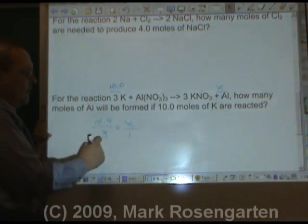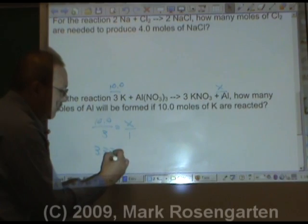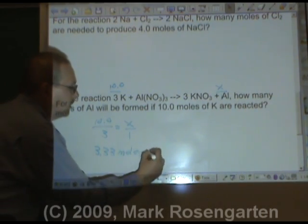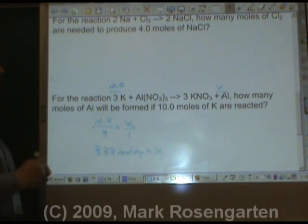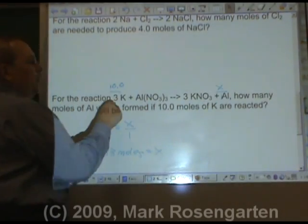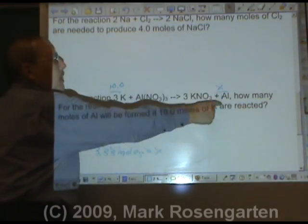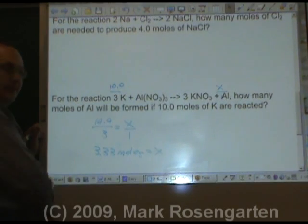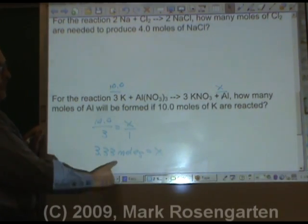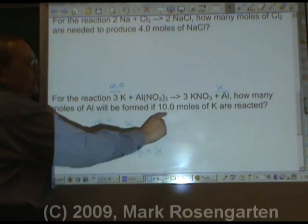So what's 10 divided by 3? 3.33 moles. And that's how many moles. And because it's a one to three ratio, whatever K is, Al will be one third of that. That's why. Three sig figs because of these three sig figs.